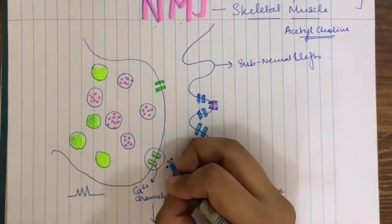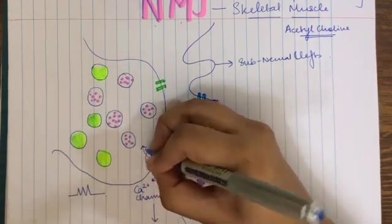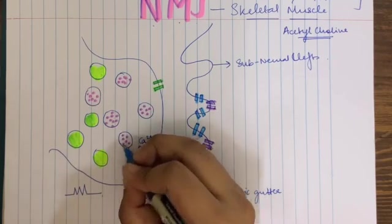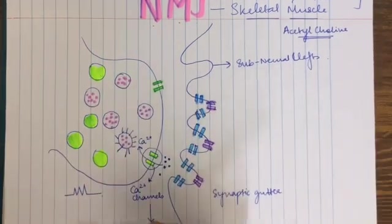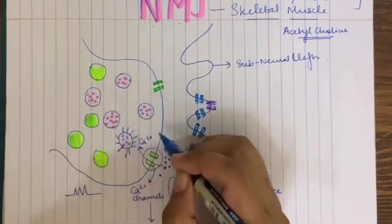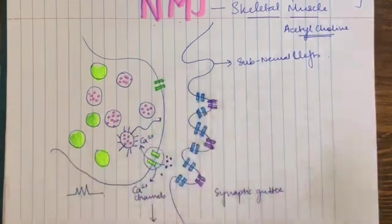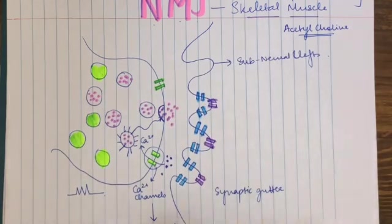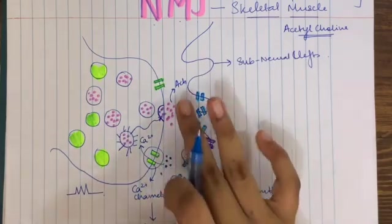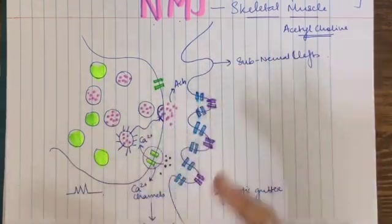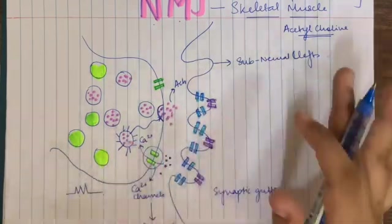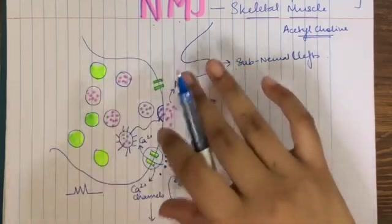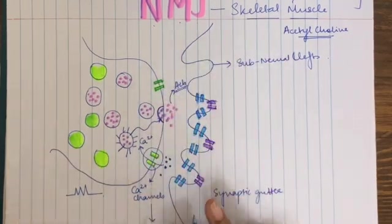That leads to all the calcium ions outside in the synaptic cleft to move inside. When these calcium ions move inside, they cause the vesicles — which are stuck to the cytoskeleton of the axon's cytoplasm — to break off. These vesicles travel near the membrane, fuse with it, and let out all these acetylcholine neurotransmitters into the synaptic cleft by the process of exocytosis. Exocytosis is the removal of any kind of cellular substance from the cell.